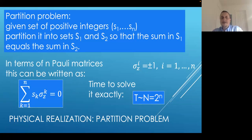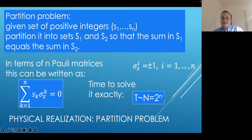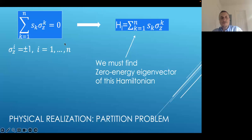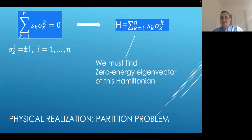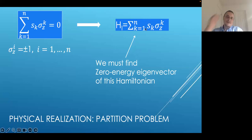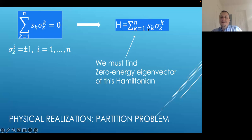This looks like a very simple problem but it is surprisingly complex. If you want to solve it exactly and definitely, you simply have to search through all 2^M possibilities. To set it into a suitable quantum mechanical problem, we interpret those binary variables as eigenvalues of Pauli operators, and our goal is to find the eigenstate of this Ising Hamiltonian that corresponds to zero eigenvalue. The problem is that zero eigenvalue is not the ground state — it is somewhere in the middle of the spectrum — so we cannot use standard quantum annealing.